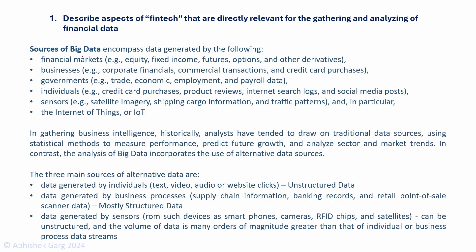Let's see the sources of big data. Data can be generated by financial markets; by businesses such as corporate financial statements and management commentaries; by governments through trade, economic, employment and payroll data; and by individuals through product reviews, internet search logs and social media posts. Sensors can provide data such as satellite imagery and traffic patterns. IoT refers to internet-enabled devices that have various sensors and generate a variety of data.